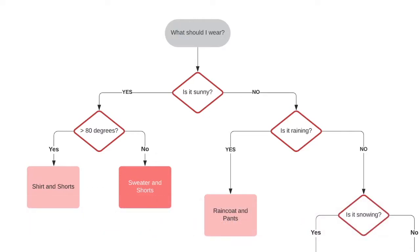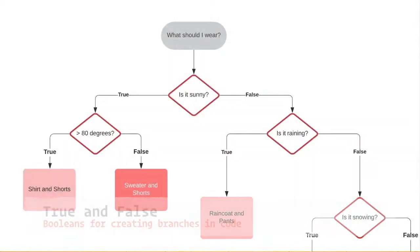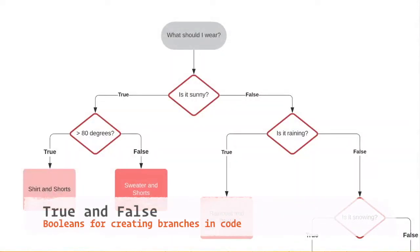Take a look at this decision tree of what should I wear. If it's sunny outside, then the next thing I'm going to look at is: is it greater than 80 degrees? If yes, then I'm most likely going to wear a shirt and shorts. If no, then I'm probably going to wear a sweater with shorts. In programming, we do the exact same thing, but instead of saying yes and no, we say true and false.